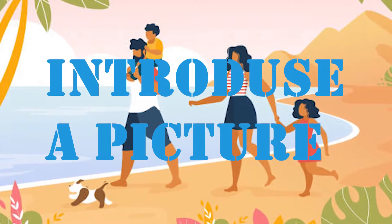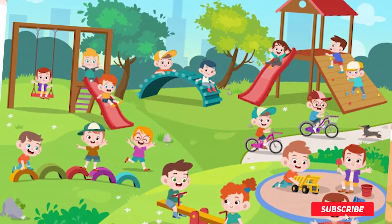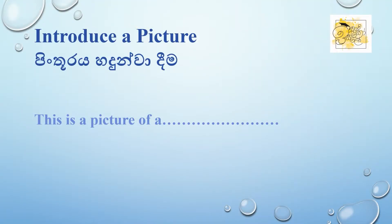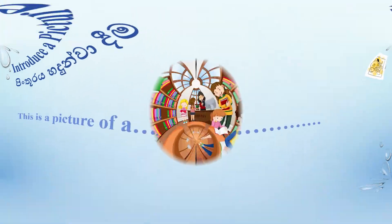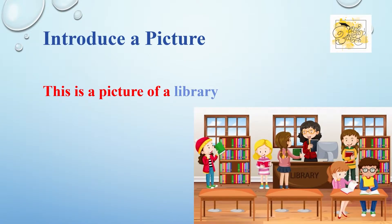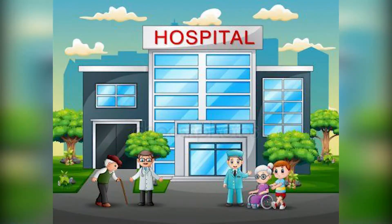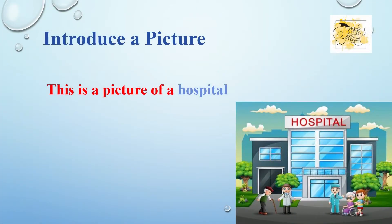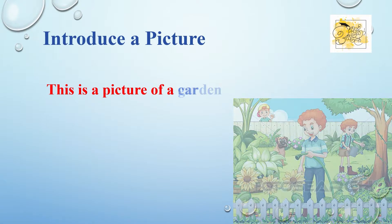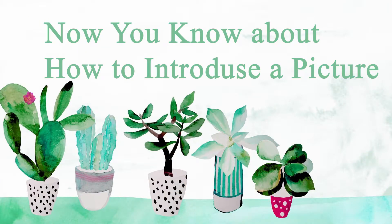Introduce the picture — for that you can use this structure. This is a picture of ___. For example: This is a picture of a library. This is a picture of a school. This is a picture of a hospital. This is a picture of a garden. This is a picture of a car.